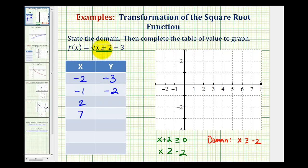If x is 2, we have the square root of 2 plus 2, or the square root of 4, that's 2 minus 3, that's negative 1. And if x is 7, this is going to be the square root of nine, which is three, three minus three is zero.